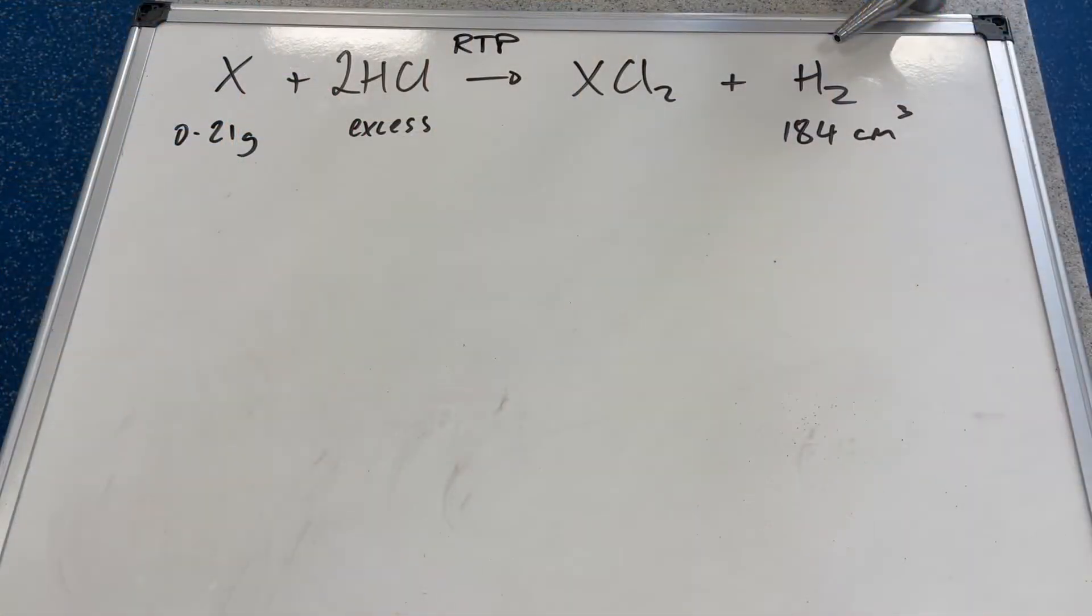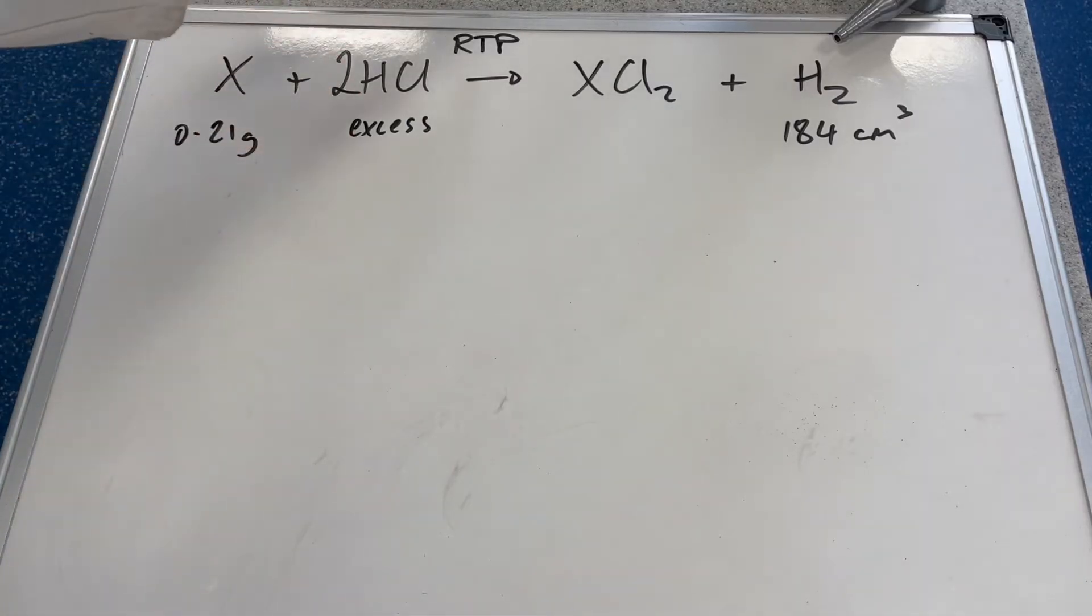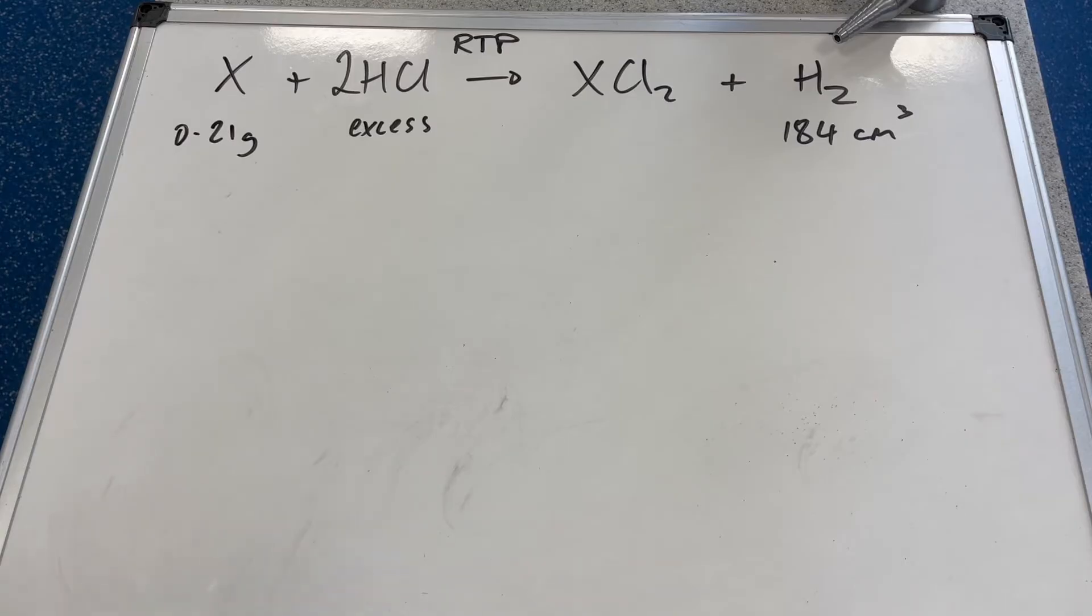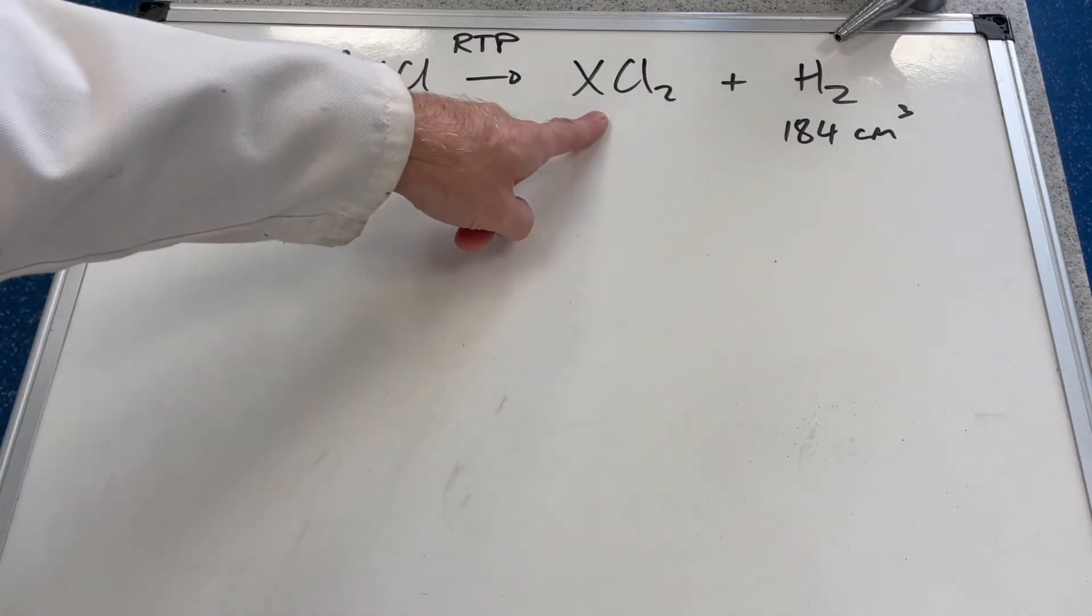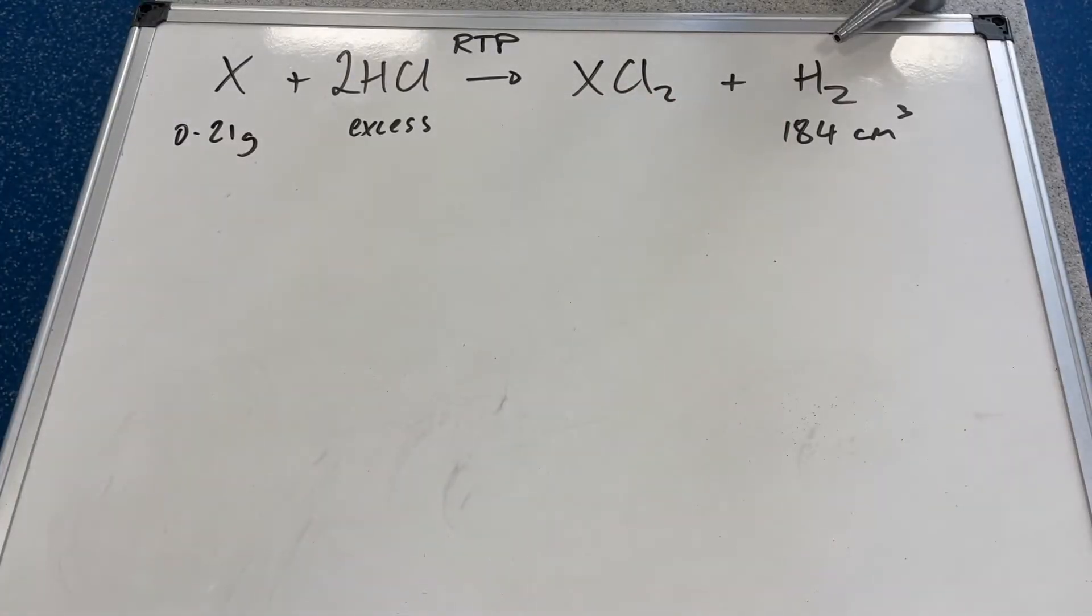Here's the equation. We've got 0.21 grams of X reacting with an excess of hydrochloric acid. I've written RTP up there so we're going to assume the conditions in the lab today have been room temperature and pressure. We're going to use the molar gas volume - one mole of any gas at RTP has a volume of 24 dm³. The reaction made XCl₂ and hydrogen gas and we know we've made 184 cm³ of it.